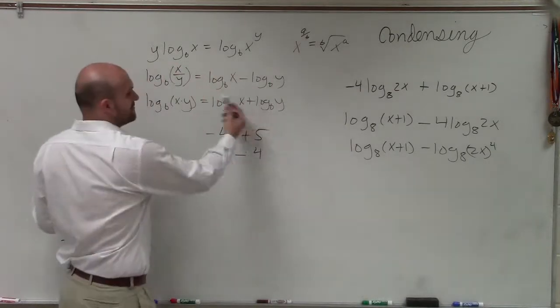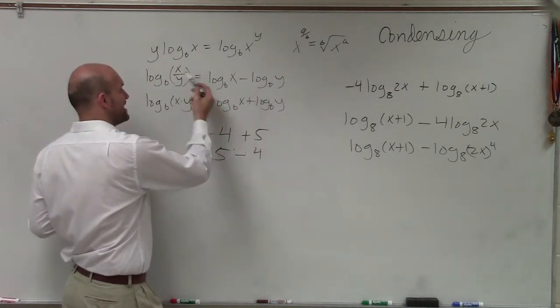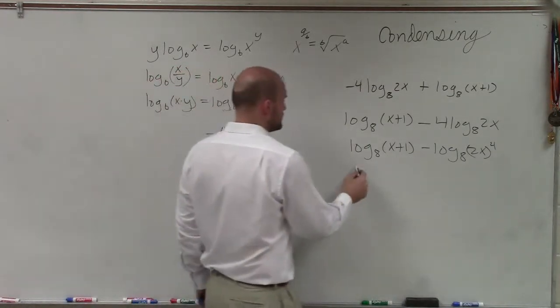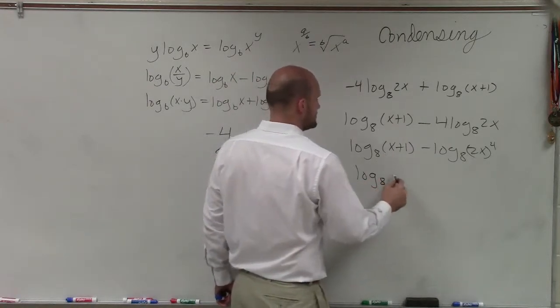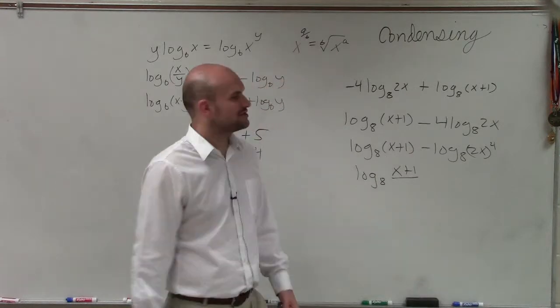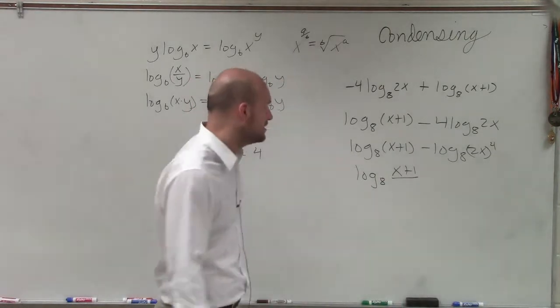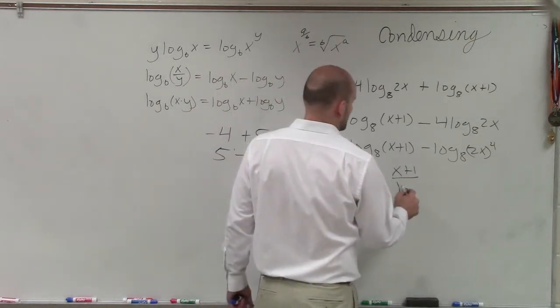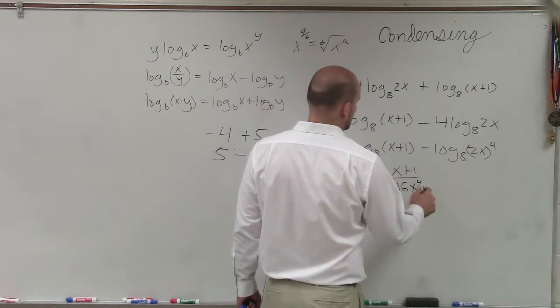Now, I have the difference of two logarithms with the same base. I can rewrite now as the quotient in one single logarithm. So therefore, it's going to be x plus 1 divided by, now I can rewrite 2x raised to the 4th, is going to be 16x to the 4th.